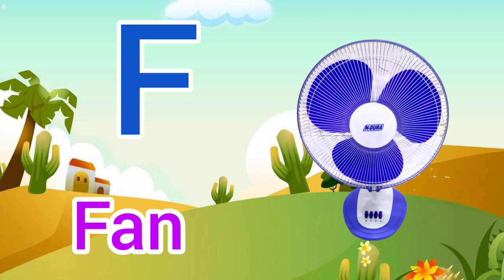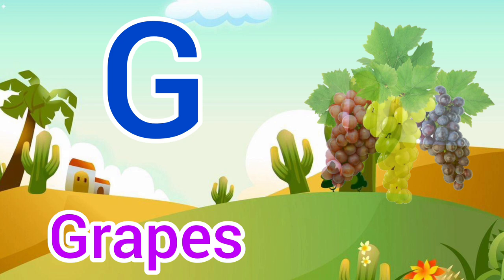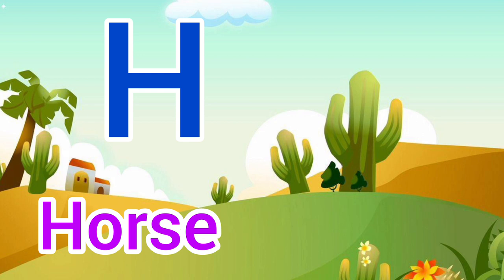G. G for Grapes, Grapes means Anggur. H. H for Horse, Horse means Ghoda.